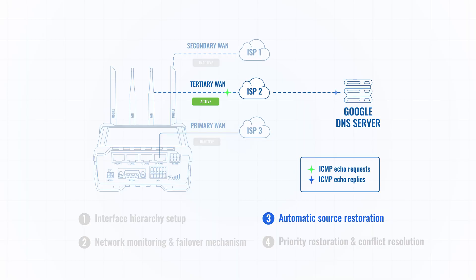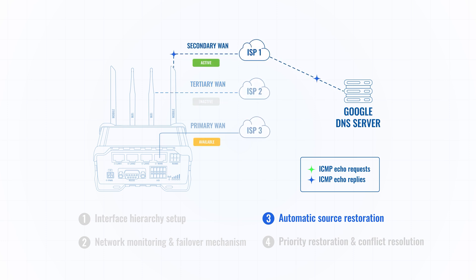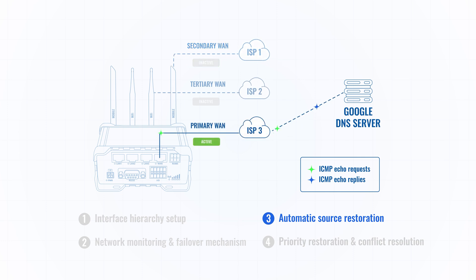If our router is using Wi-Fi connectivity and sees that a mobile interface has become available, it will switch back to that connectivity source. And if wired connectivity comes back up, the router will switch back to use that source as well.